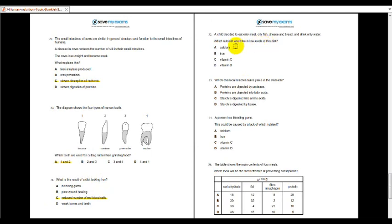32, which nutrient would be low levels in his diet? He only want to eat meat, fish, cheese, bread, water. Iron is present in meat. Vitamin C. The answer. Calcium can be found in the cheese. Vitamin D can be found in meat. 33, which chemical reaction takes place in the stomach? Stomach. Proteins are digested by protease. Correct. B. Wrong. Protein. Protease. Seriously. C. No. D. No. 34, a person has bleeding gums. This could be caused by a lack of vitamin C. C is the answer.